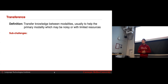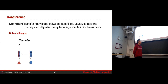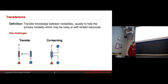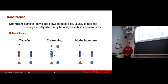Transference is all about transferring information between modalities, typically from a modality with more data or better pre-trained models, to help one with limited resources. We'll see three sub-challenges: first, transfer — if you have a large pre-trained model, how can you best transfer information to other models? Second, co-learning — where the other modality is used as an implicit signal in the input or output step. Third, model induction — maintaining two separate models that interchange information to help each other.